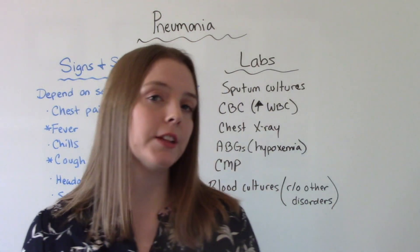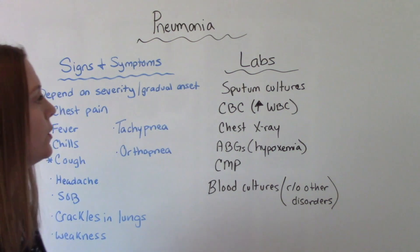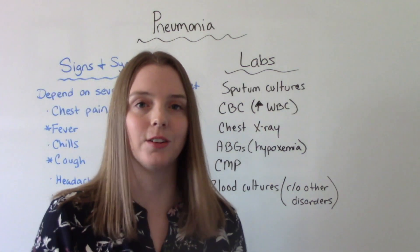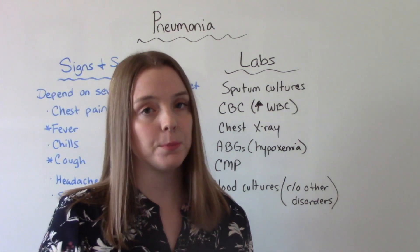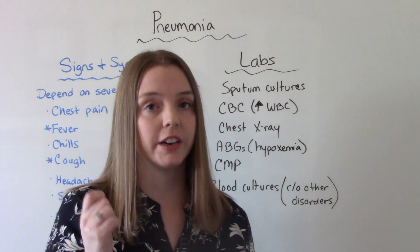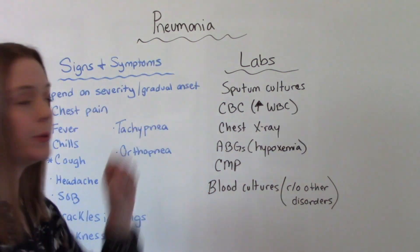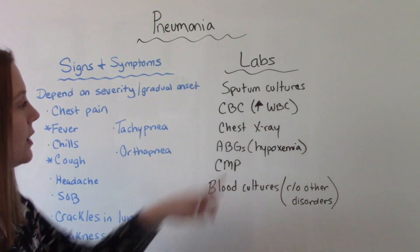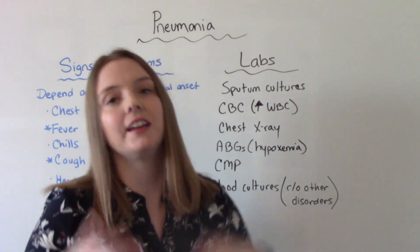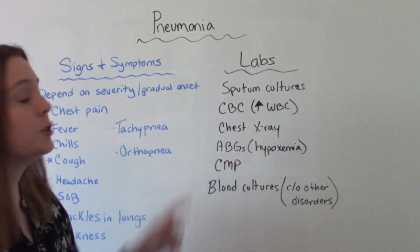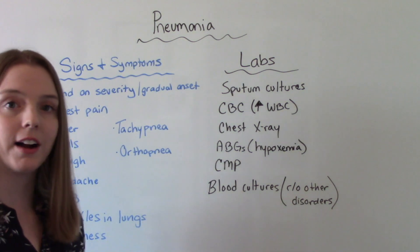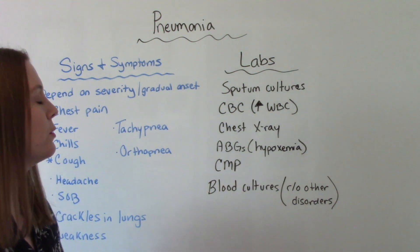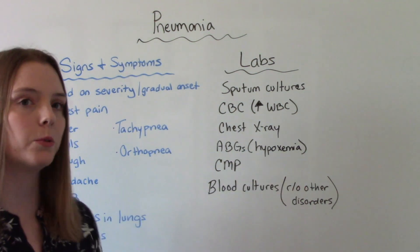When it comes to labs, some tests you might do include sputum cultures. If they have a productive cough, we can take that culture from there; if they have a non-productive cough, we might need to suction to get that sample. We'll do a CBC, and upon the results we will see that the white blood cells are elevated, indicating infection and inflammation. We'll also do a chest x-ray to see what's going on in the lungs. ABGs will be drawn and likely will result in hypoxemia.